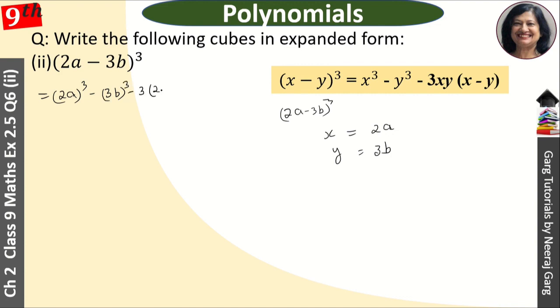Minus 3 times x times y, where x is 2a and y is 3b, in bracket (x minus y), which is (2a minus 3b). So the minus sign: 3 into 2 is 6, and 6 into 3 is 18ab, and bracket is 2a minus 3b.